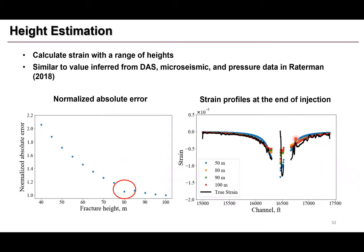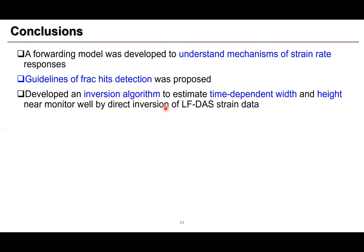After getting fracture width, we use it to match the strain profile at the end of injection to estimate fracture height. Our method minimizes the absolute value of the strain profile mismatch, and when it reaches the minimum absolute value we assume that is the average created fracture height. For one of the stages, we find the fracture height is about 80 meters. This result is compared with literature published by ConocoPhillips and is pretty consistent with their conclusions.